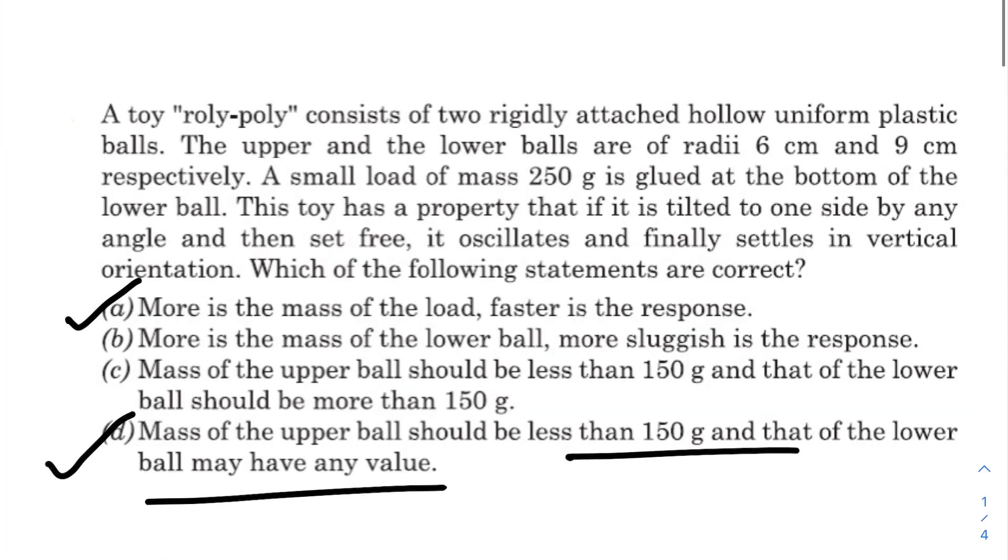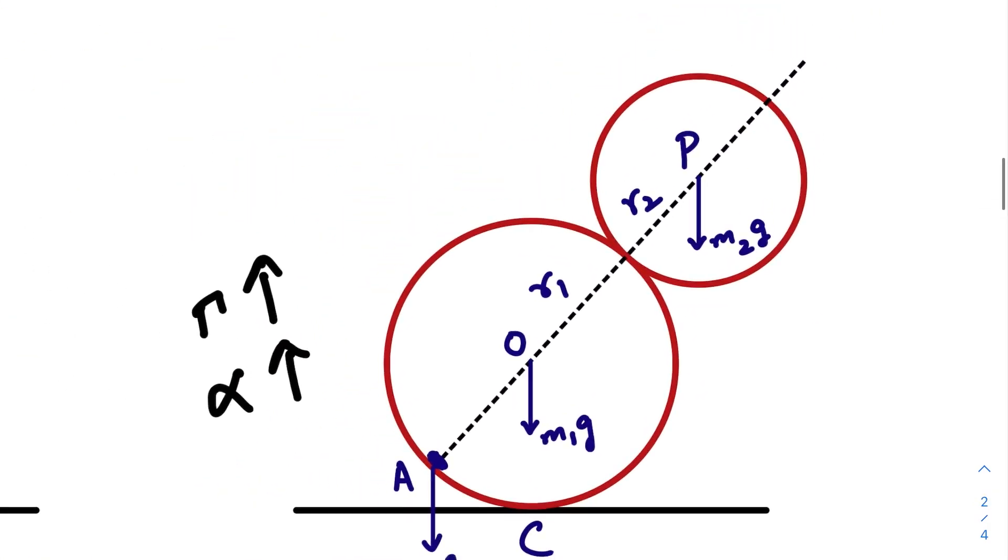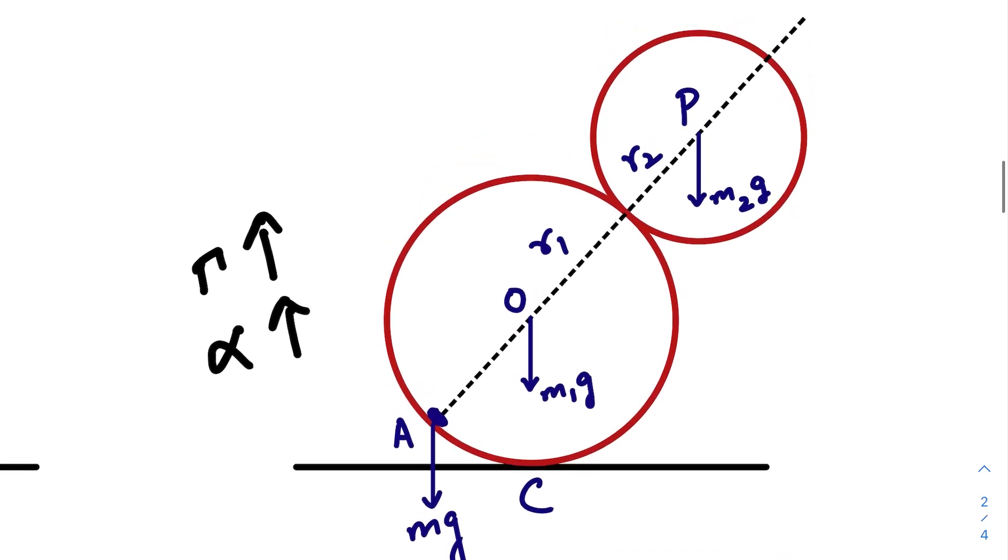More is the mass of the lower ball, more sluggish is the response. Okay, now check this diagram once again. If you increase the mass of this ball, then the center of mass will shift towards O, hence decreasing the torque, decreasing the angular acceleration, making the motion more slow. The response will be very slow, the initial response. So option B is also correct.